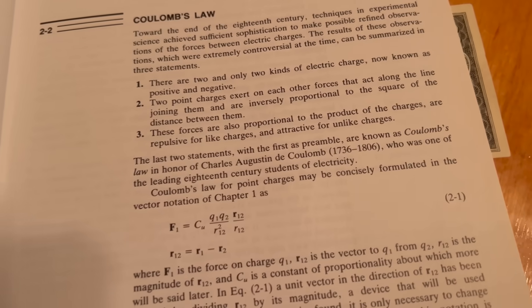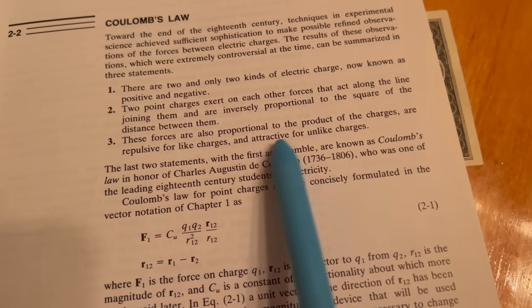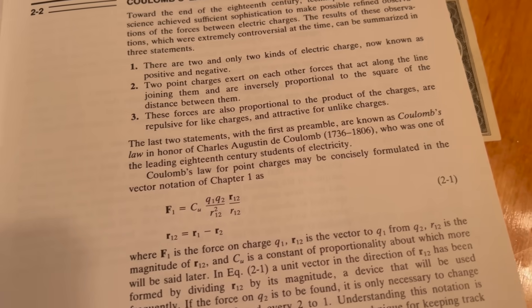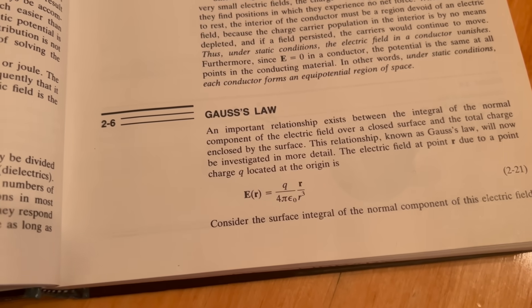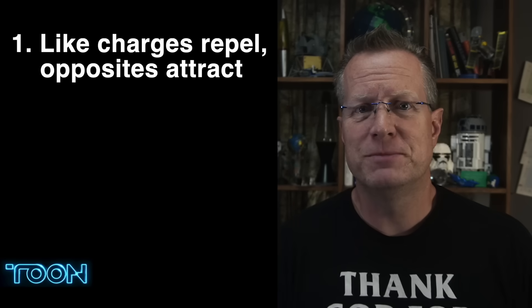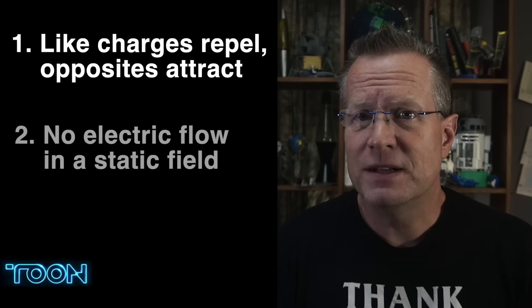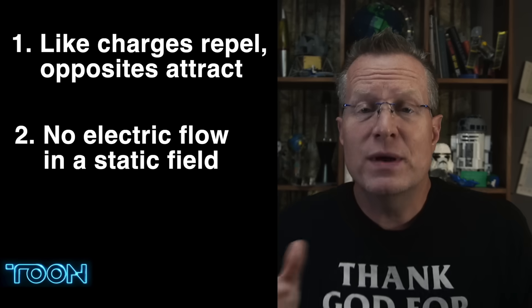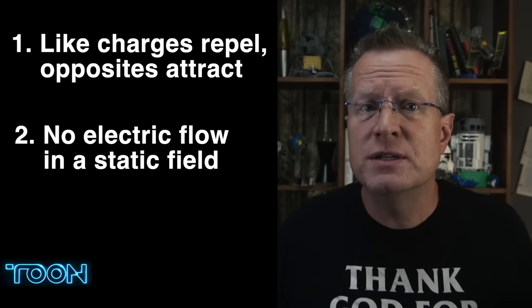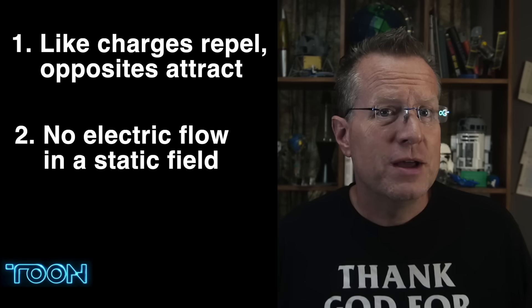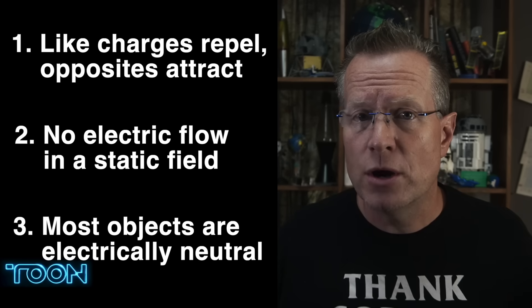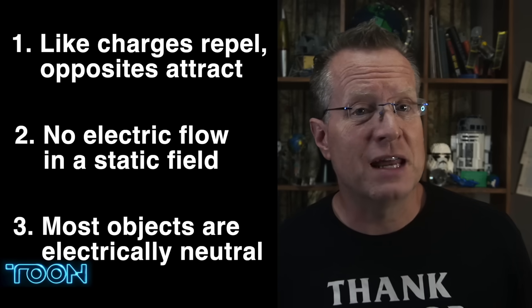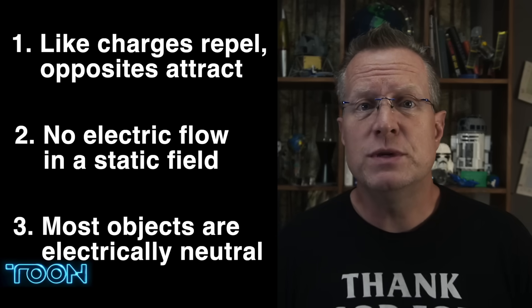The only thing you need to know is that electrostatic force is repulsive for like charges and attractive for opposite charges. It's the same in electrostatic fields — one side is positive, one side is negative, and an object in that field will be attracted to the side with the opposite charge. Second, an electrostatic field is static — it's in the name. There is no flow of electricity unless something changes. And third, most objects have the same amount of positive and negative charge — they are neutrally charged, so they're not really affected by an electrostatic field.